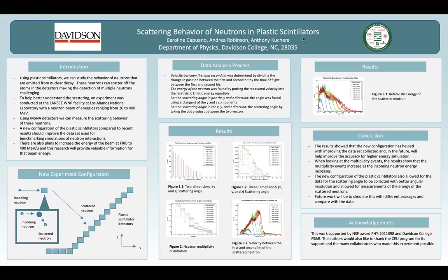The new configuration of plastic scintillators allowed for the measurement of the energies of the scattered neutrons. For energies between the first and second hit of the neutron, we can see that the energy drops off at the specific energy cut applied to the data.